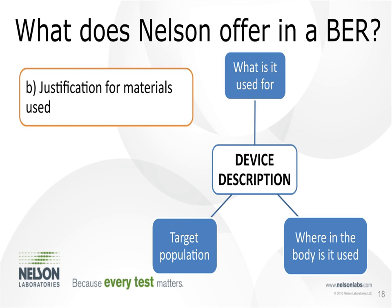The second section is Device Description — covering the target population, where it is used in the body, and its intended function. This begins the justification for materials used, because once we identify what the device is and state that these materials are common in this type of device, we've already given the specifics of where and how it's used.